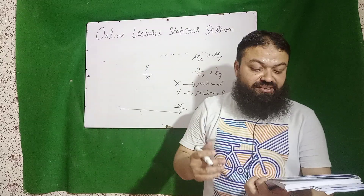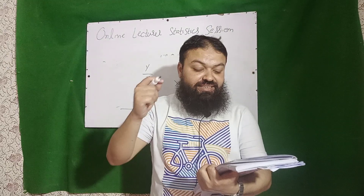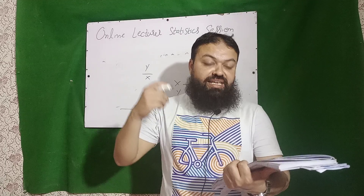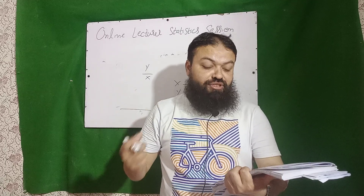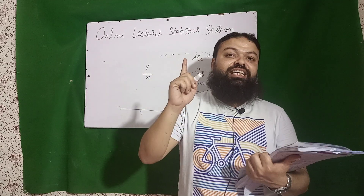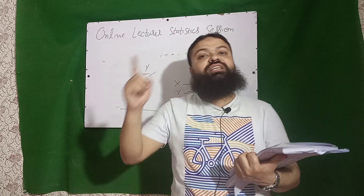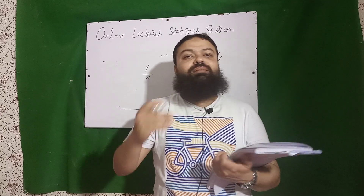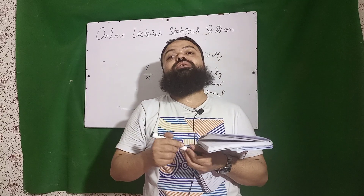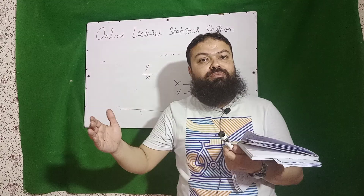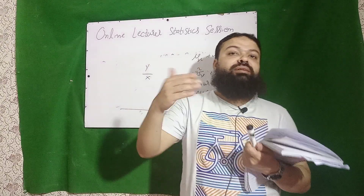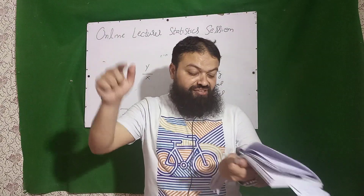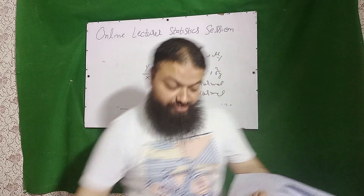Next question: geometric distribution is also called the waiting time distribution. In negative binomial distribution, if we need one success it becomes the geometric distribution. In binomial distribution, trials are fixed and number of successes are not fixed; whereas in negative binomial and geometric distributions, trials are not fixed but number of successes are fixed.